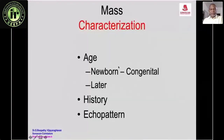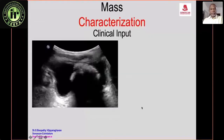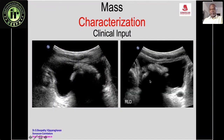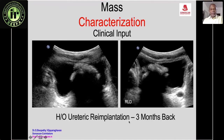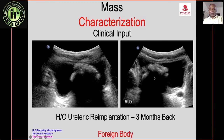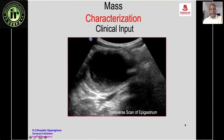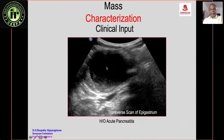Age, history, and echo pattern aid characterization. A mass in the urinary bladder that shifts with position suggests a calculus, but with a history of ureteric reimplantation three months prior, such a large calculus cannot form so quickly — the diagnosis is a foreign body left in the bladder. A pancreatic cyst with a history of acute pancreatitis is a pseudocyst.